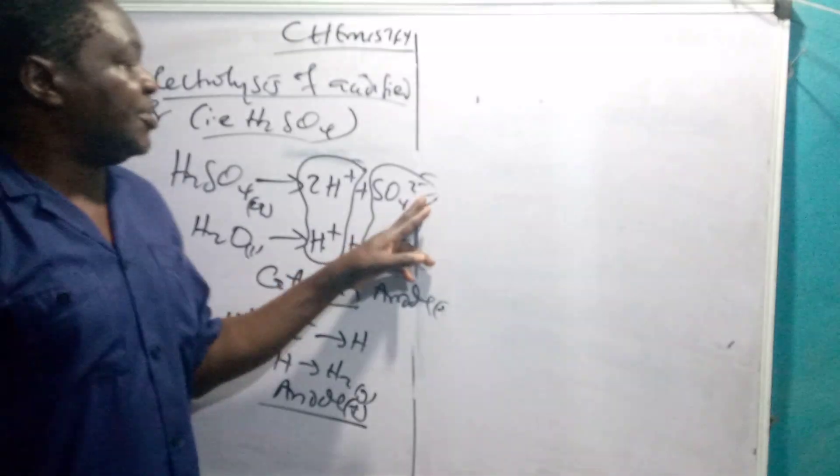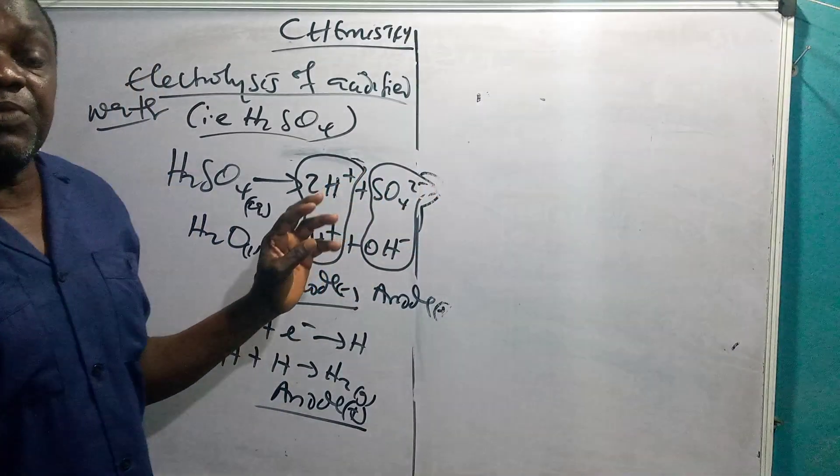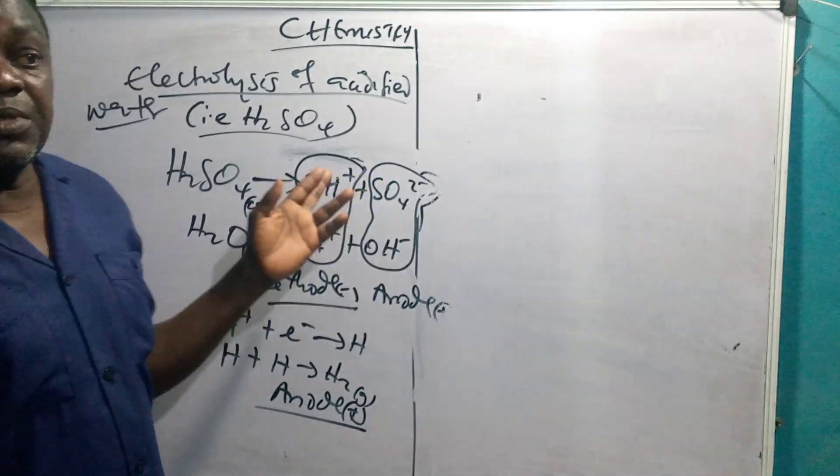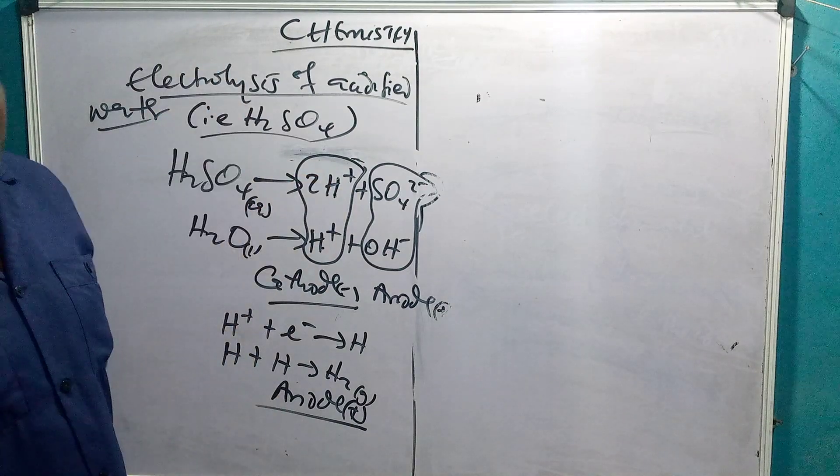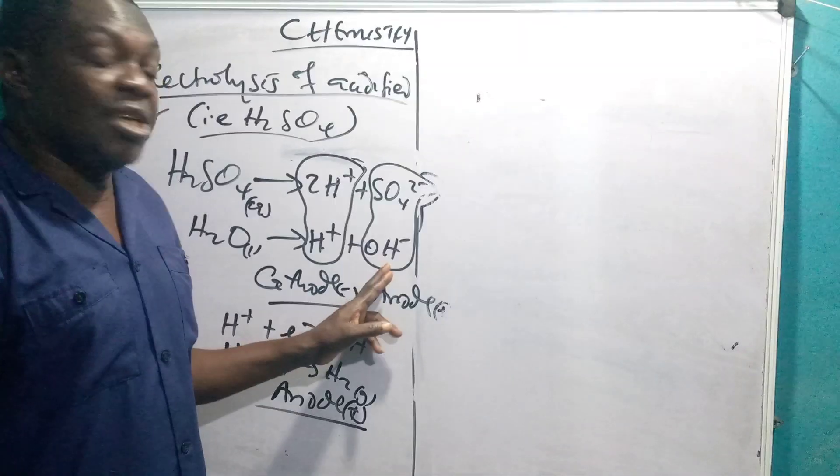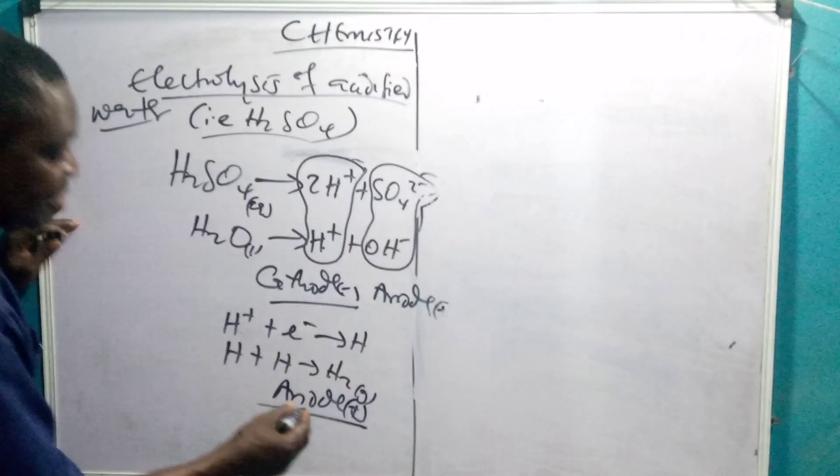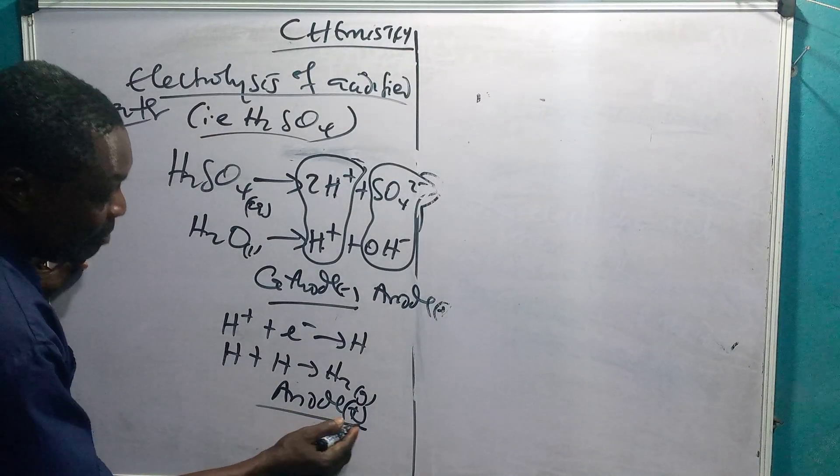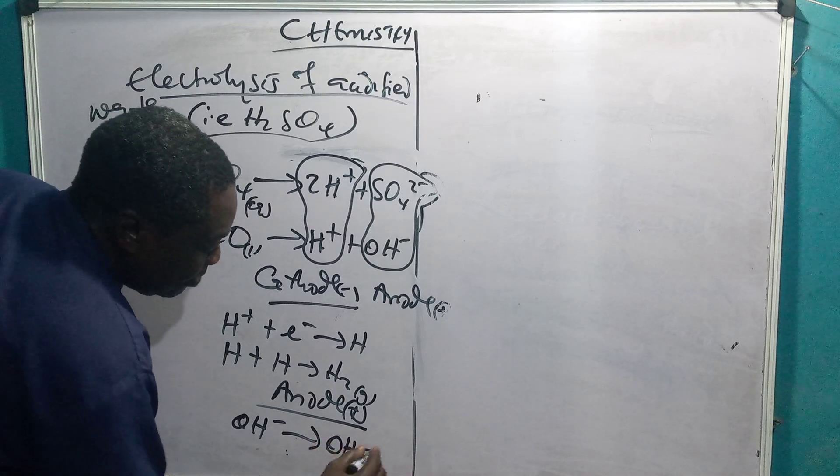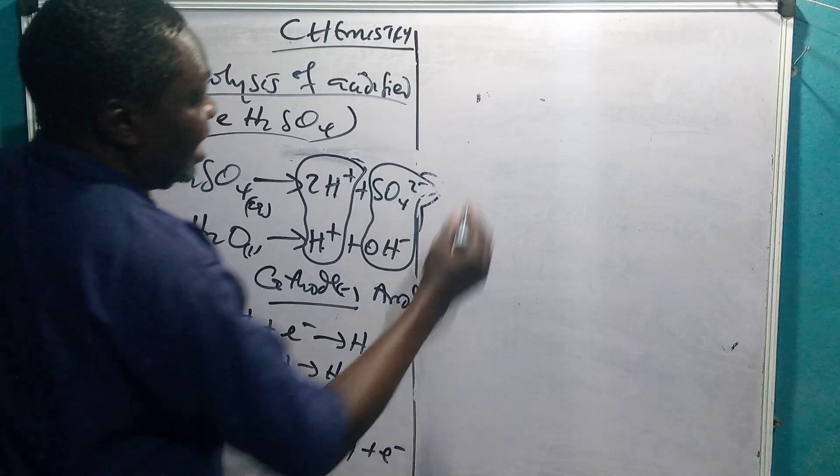But the problem is this. You can see SO4 2- is highly electropositive. All those that are highly electropositive, like SO4 2-, NO3-, those are highly electropositive on top of the series. They are never discharged. Instead, they prefer to remain as ion. Because OH is lower in the electrochemical series, it can easily be given off. Therefore, OH being lower in the electrochemical series migrates to the anode. You have OH- to give out the excess electron plus e-. You see, it has given out the excess electron. So you now have OH as a neutral species.